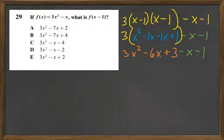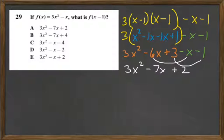I still have to subtract x and 1. So that's our next step: 3x squared minus 7x, because that's negative 6x minus 1x. And then I have to combine that plus 3 minus 1 equals 2. So that gives you 3x squared minus 7x plus 2. My answer is A.